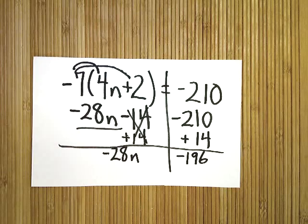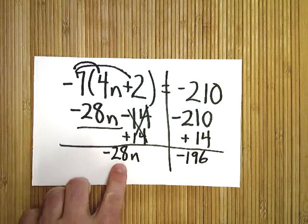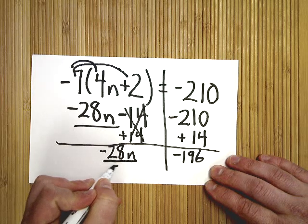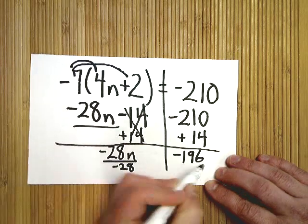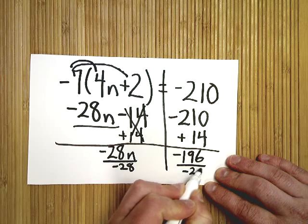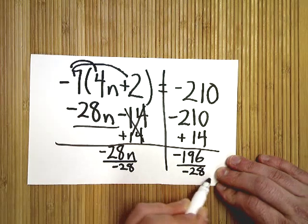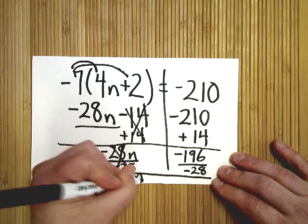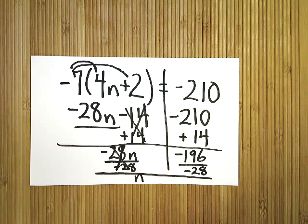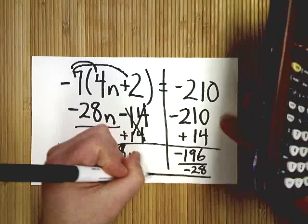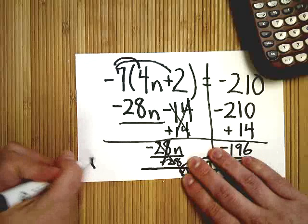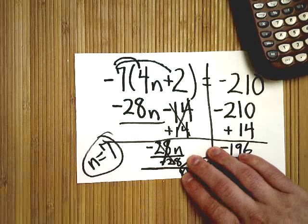And now I'm at Finish Him. This is negative 28 times n, or negative 28 groups of. So I'm going to divide by negative 28. Those cancel. -196 divided by -28 is 7. So n equals 7 on this one.